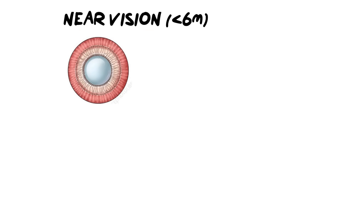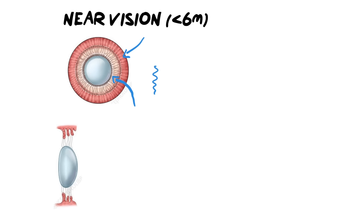Now we're moving on to near vision. Hopefully you can see some physical differences from the previous picture. The ciliary body here is a lot thicker because it's contracting, whereas the suspensory ligaments are squiggly — because they are relaxing. In the side image, you can also notice that the suspensory ligaments have relaxed and are more squiggly, and the lens here has got a lot fatter and chubbier.